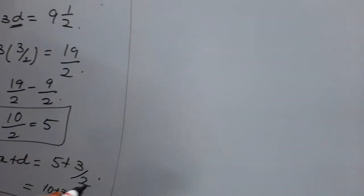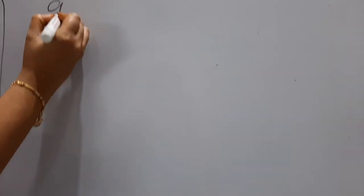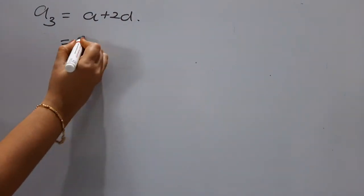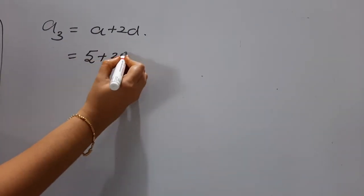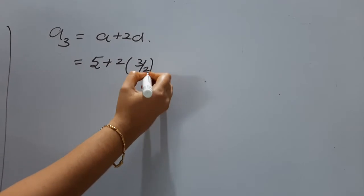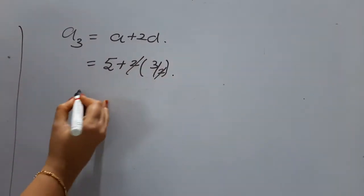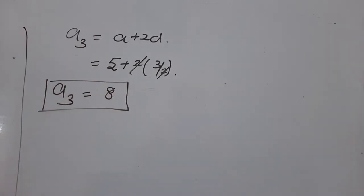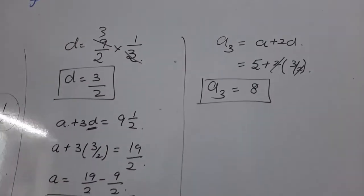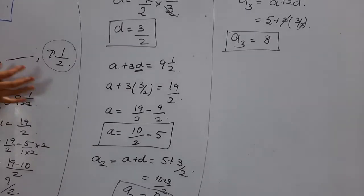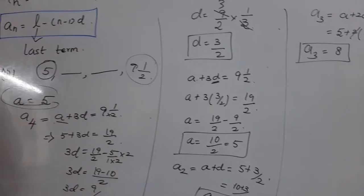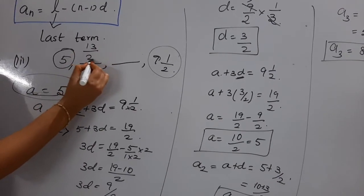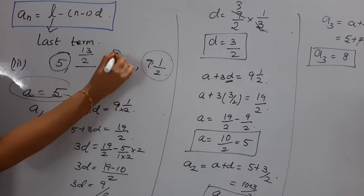The second missing term is A3 = A + 2D = 5 + 2×(3/2). The 2's cancel, giving 5 + 3 = 8. So A3 = 8. Two terms of the AP were given and the other two were missing. We found the second term as 13/2 and the third term as 8.